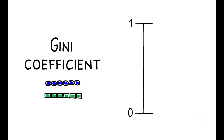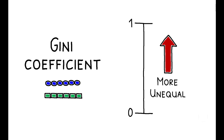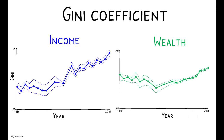To start, consider the Gini coefficient for income and wealth over this period. The Gini coefficient is a summary measure of inequality, ranging between 0 and 1, with higher values indicating greater inequality. These figures show that regardless of whether we look at income or wealth, the US is more unequal today than it was in the 1970s.